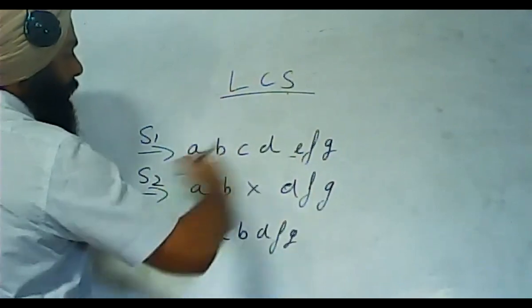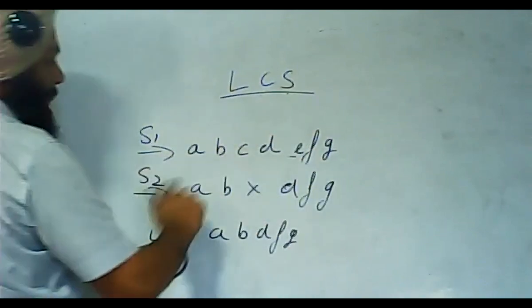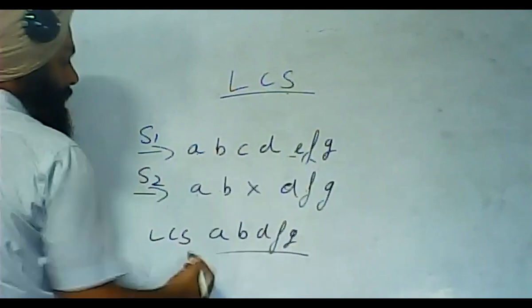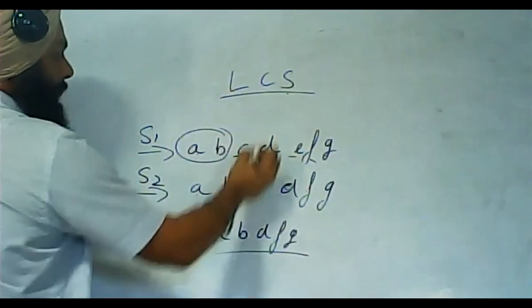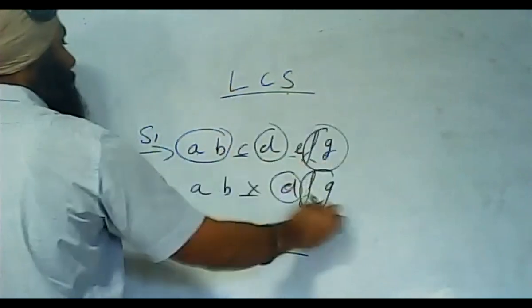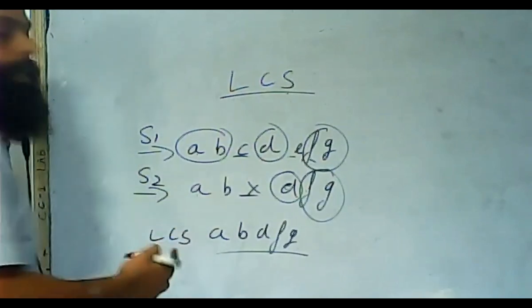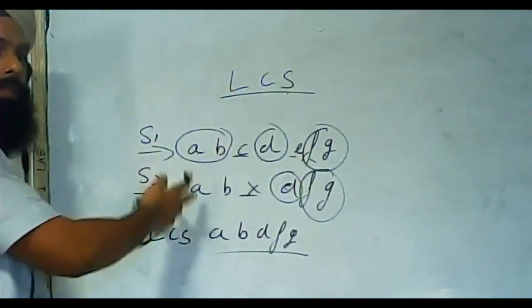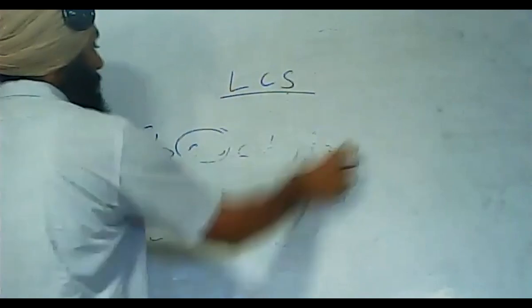The LCS is not necessarily contiguous — two elements are common here, then one element is common, then two elements are common again. This is the longest common subsequence. This is easy to find in smaller-length sequences, but we need to create an algorithm using dynamic programming to find the longest common subsequence in bigger sequences. This is helpful in DNA matching and pattern matching.